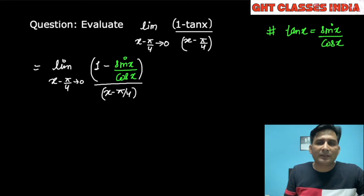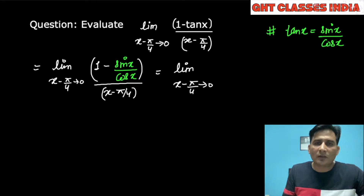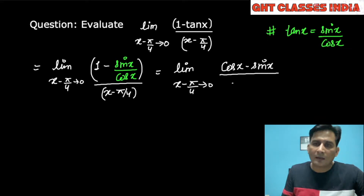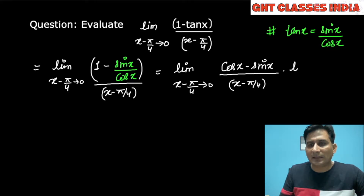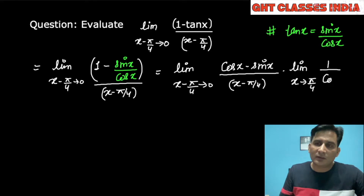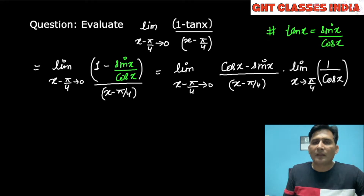In the next step, take the LCM. It is limit x minus pi by 4 tends to 0. If we take the LCM, the numerator becomes cos x minus sine x, upon x minus pi by 4, and the cos x remains in the denominator. I am applying the limit separately on that cos x in the denominator. If x minus pi by 4 tends to 0, it can be written as x tends to pi by 4.